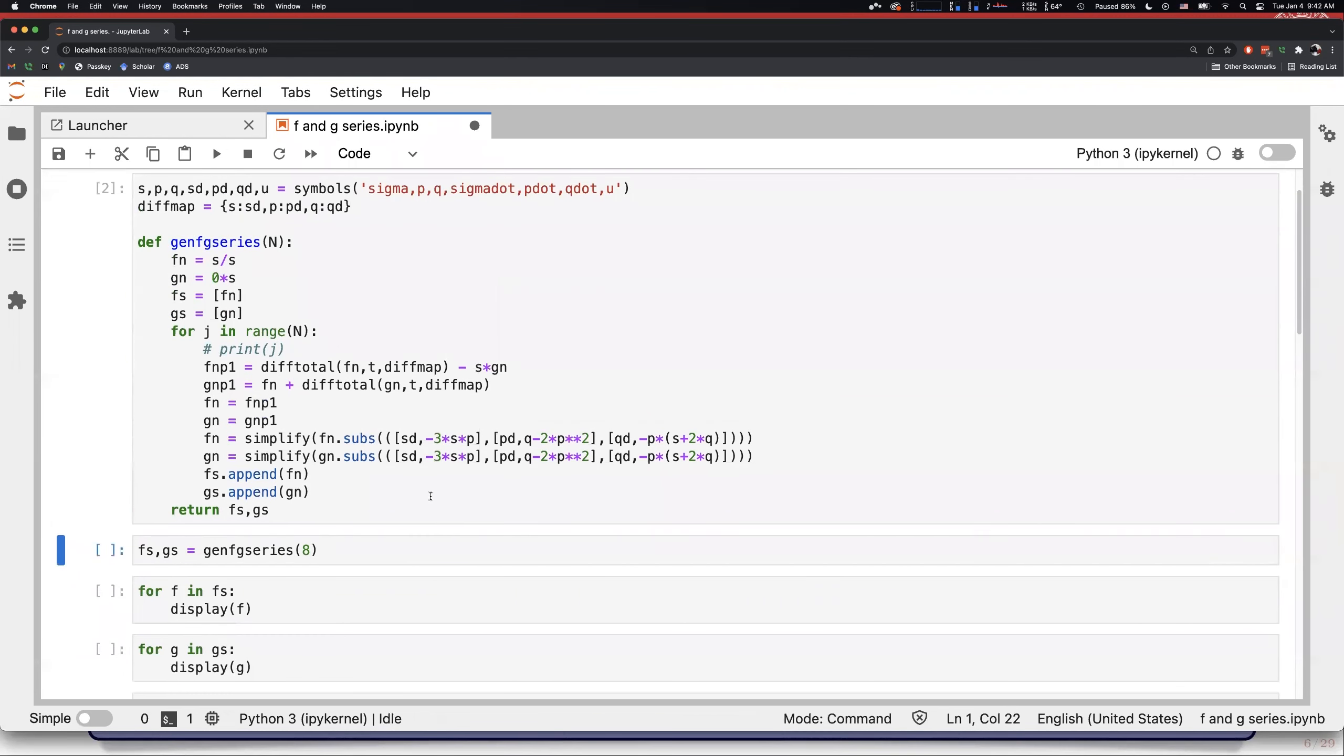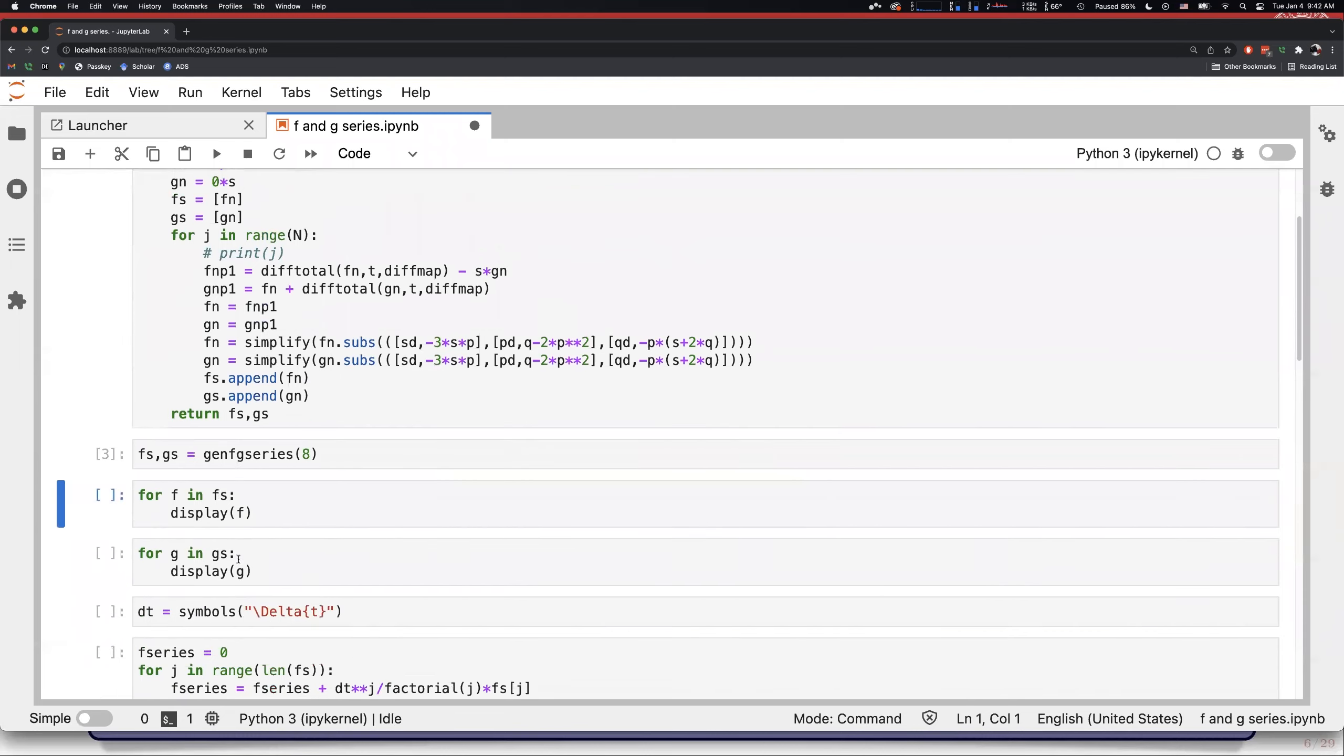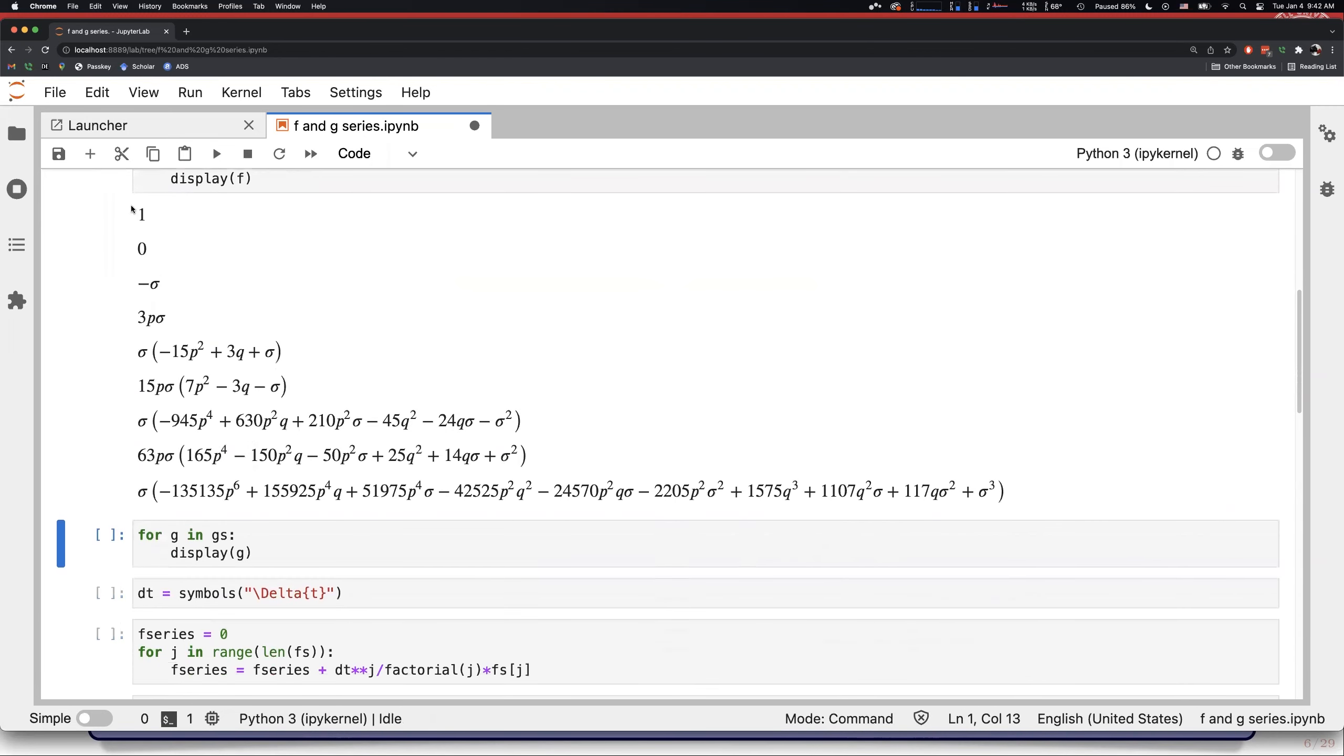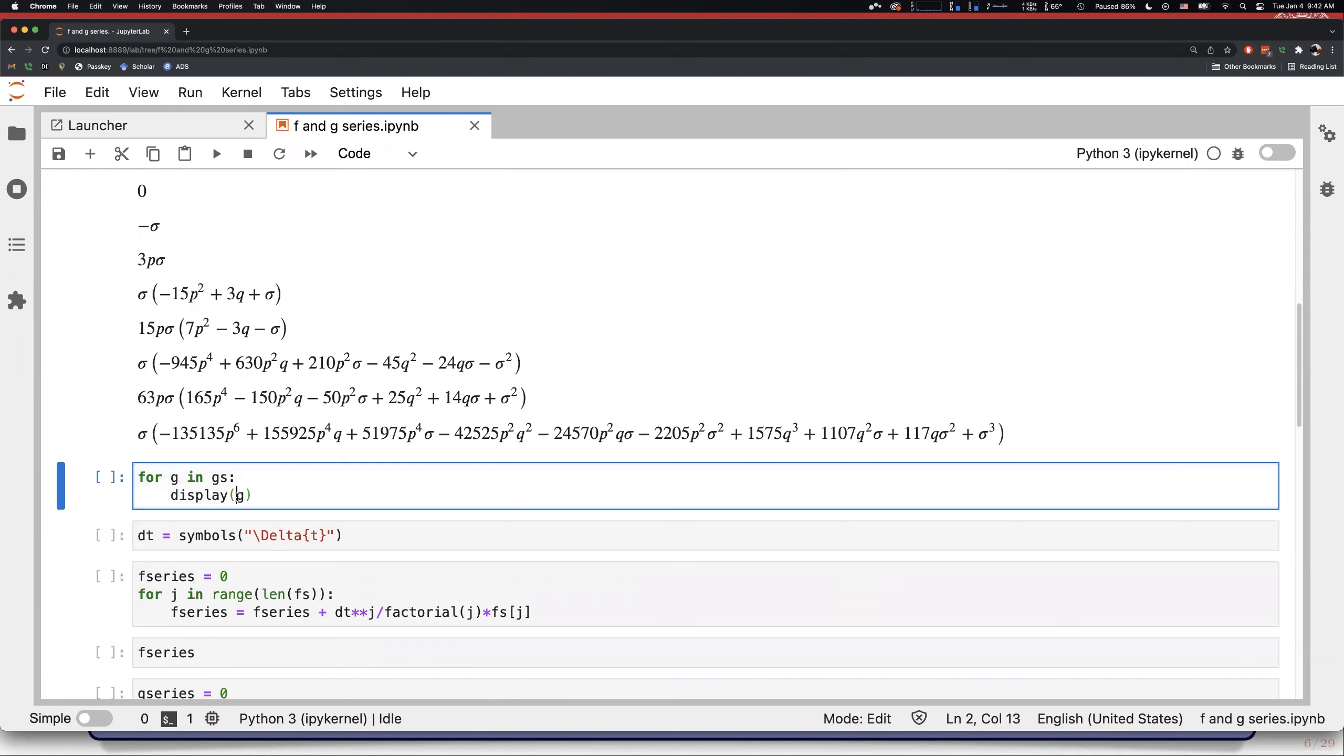So, let's see how this operates. We're going to generate an eighth order series. It'll take a few seconds. Now it's done. Let's print out the f's. And here they go. And so, you see that this gets progressively more and more horrifyingly complicated, as it must, as all series solutions do, but we're not doing any of this work. And because we're not doing any of this manually, as long as the code is good, this is guaranteed to be correct. Same thing for g.